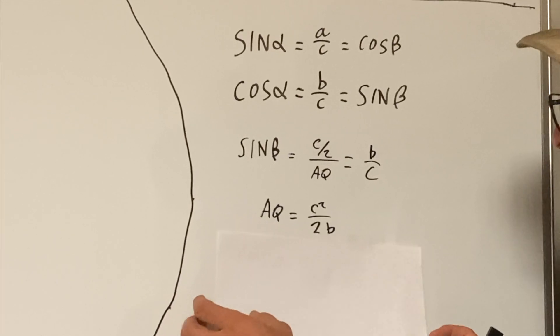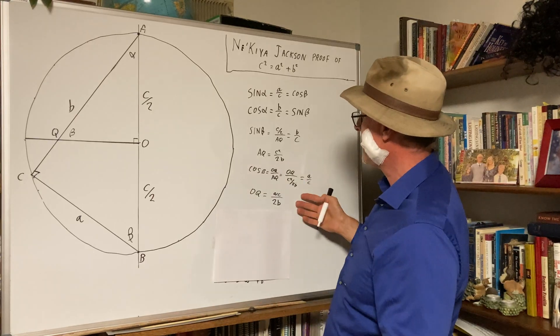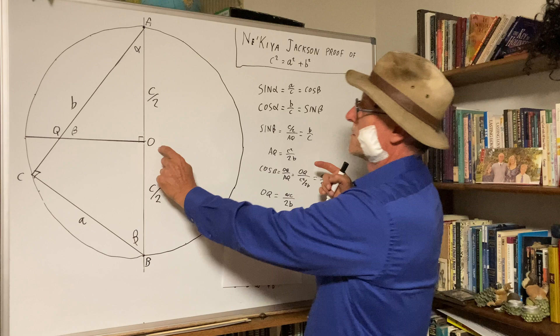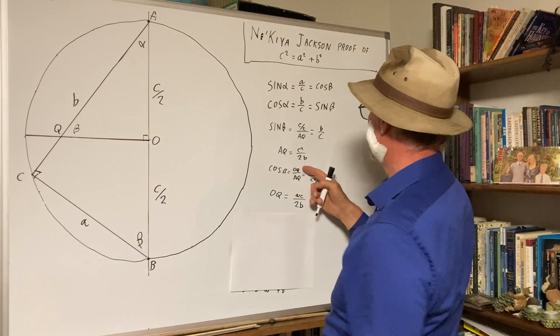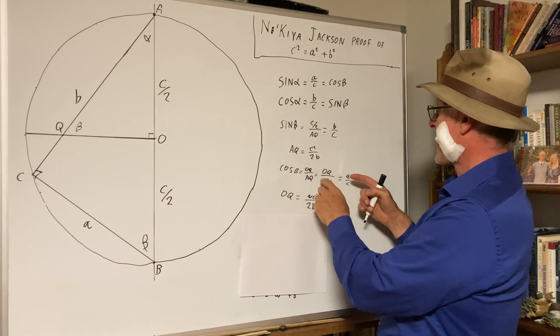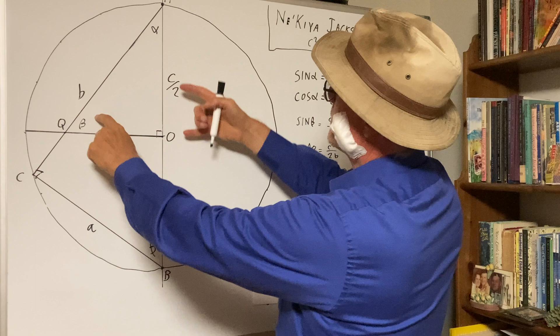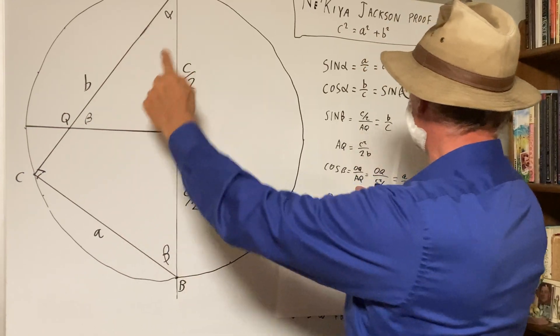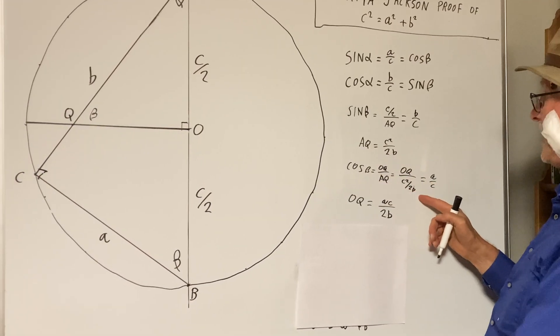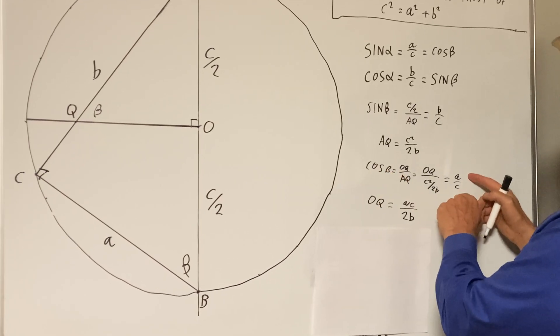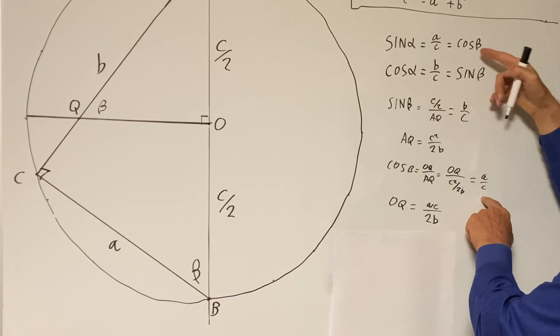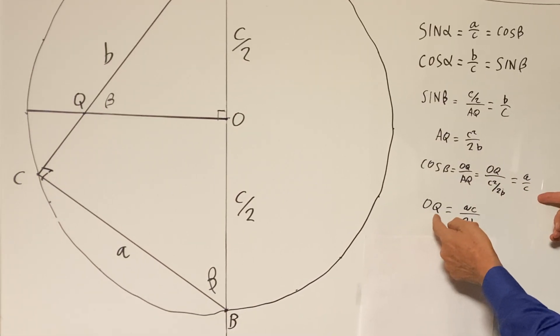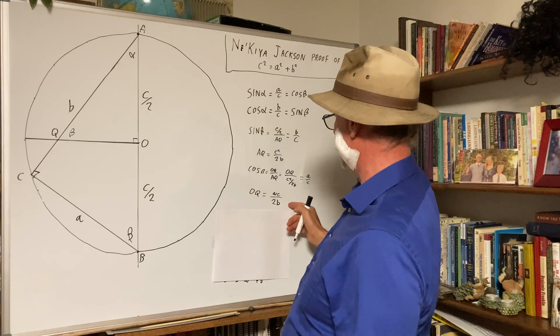And similarly, we get OQ, this distance from here to here. That's cosine beta, is OQ over AQ, which we already know. So it's OQ over C squared over 2B, but that's also equal to A over C. Cosine beta is A over C. So if you rearrange, you get OQ equals AC over 2B.